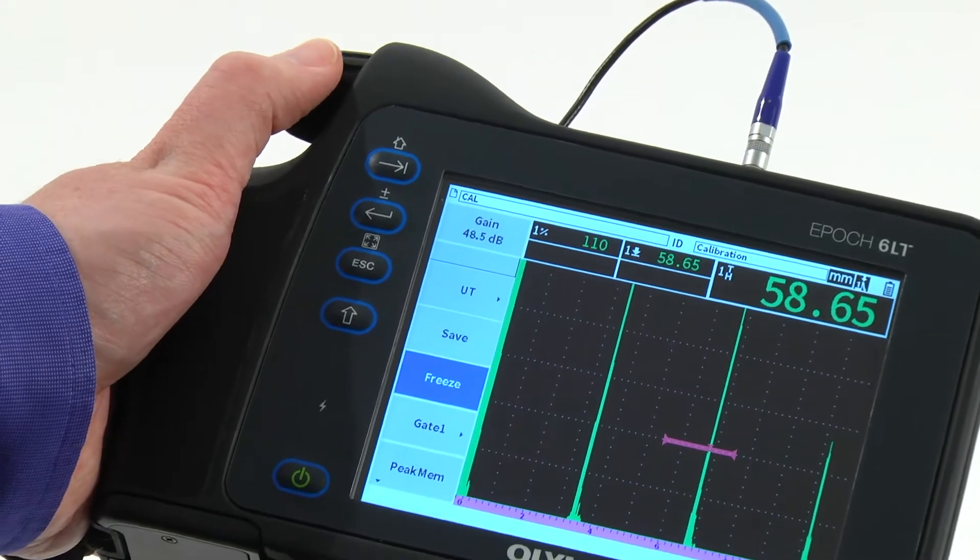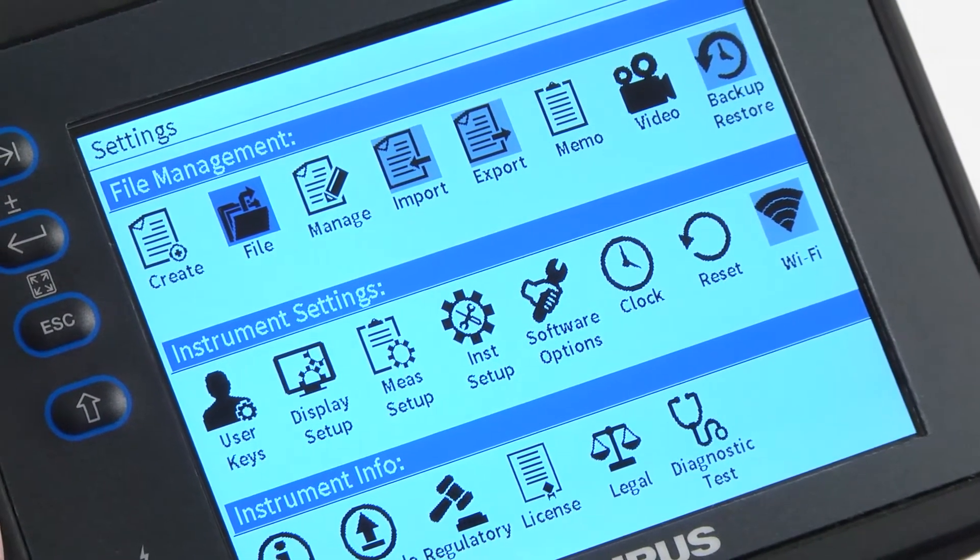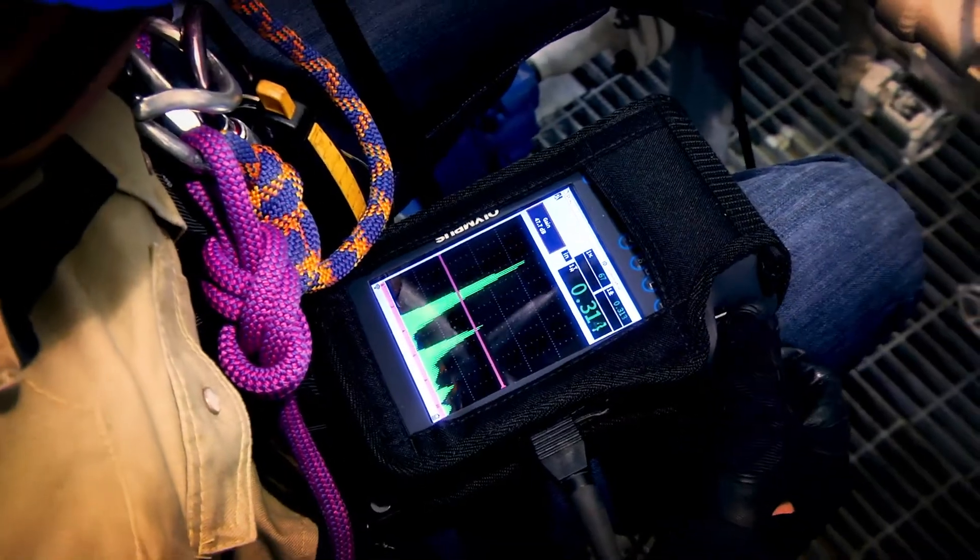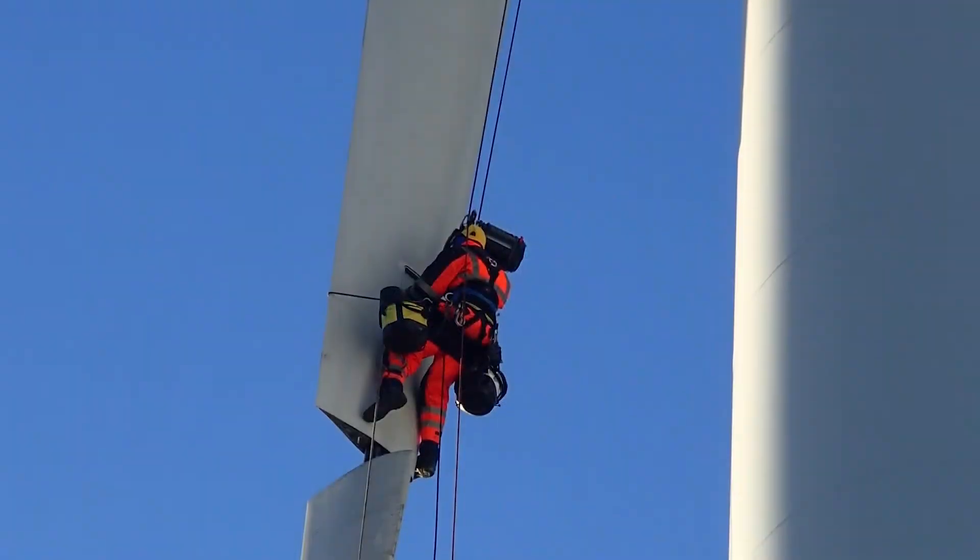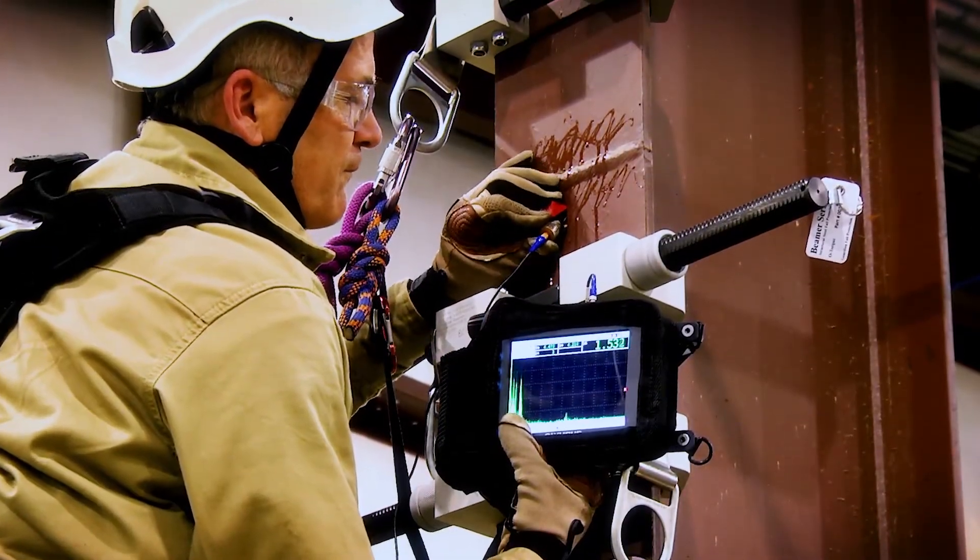With a lightweight design optimized for one-handed operation and all of the core functionality of the EPOCH 650 Flaw Detector, rope access technicians and other users requiring high portability finally have an instrument that doesn't compromise power for ergonomics.